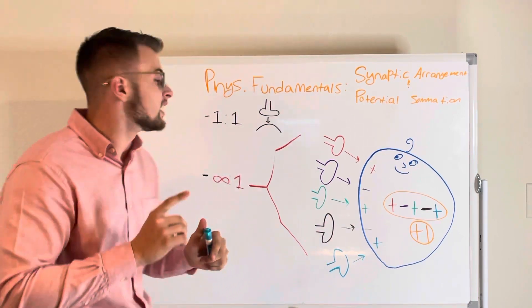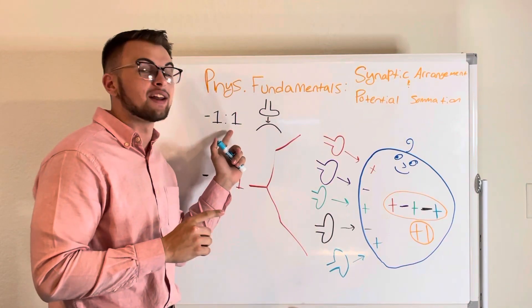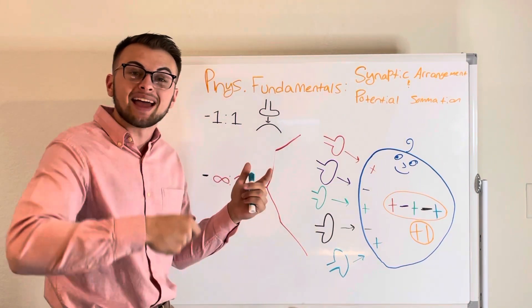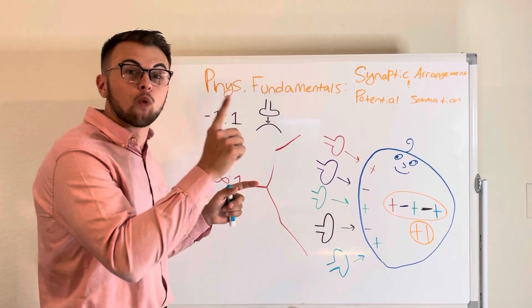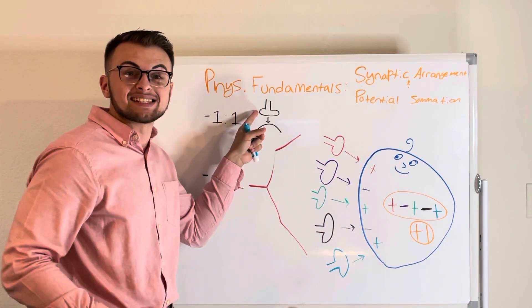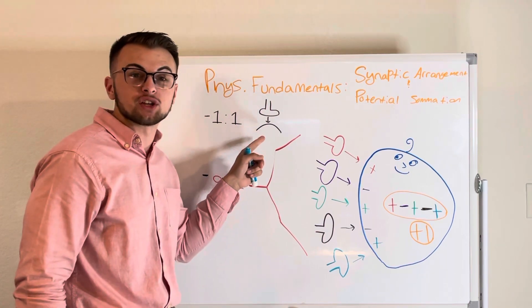One of those ways is the one-to-one cell arrangement. An example of this would be the neuromuscular junction where one motor neuron is synapsed with one muscular cell.